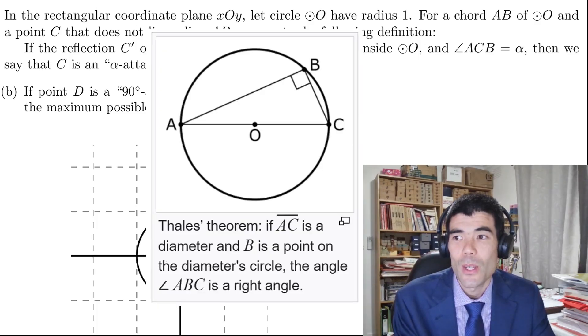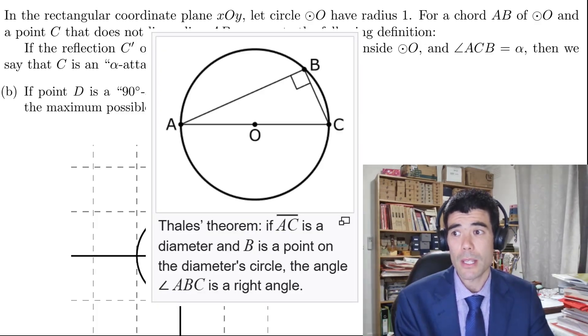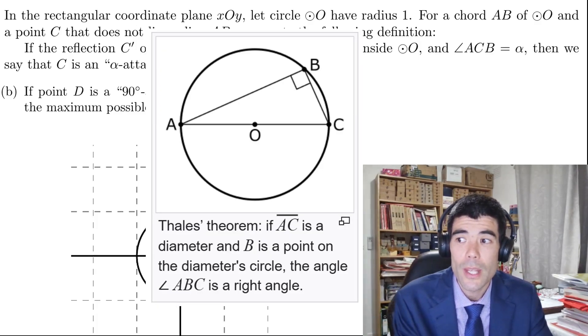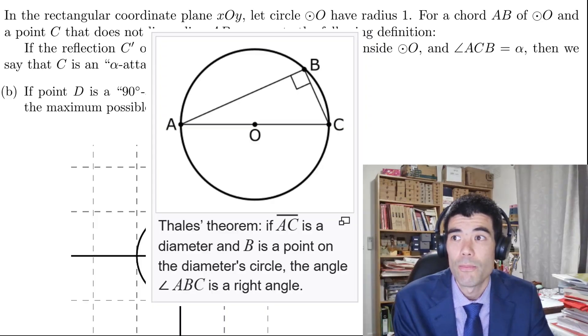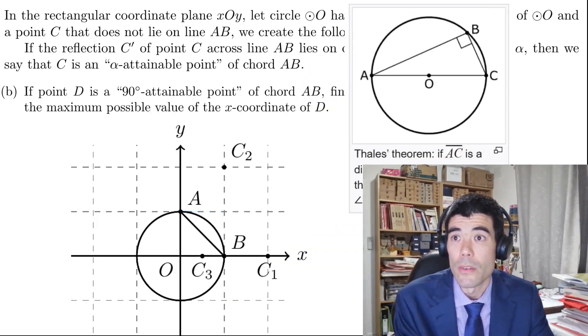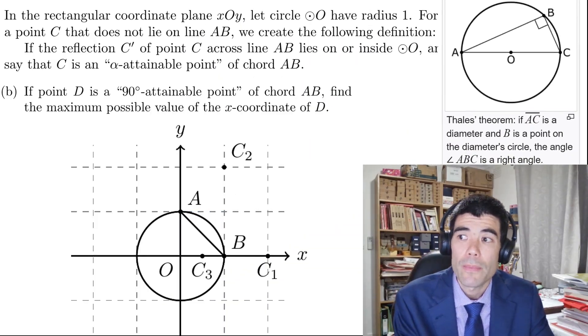Thales' theorem is going to be useful, which says that if AC is the diameter and B is the point on the circle, the angle ABC is a right angle. It actually works in reverse too, so if we know that ABD is going to be a right angle, it must lie on a circle with diameter AB.